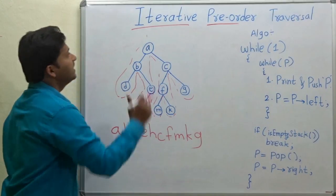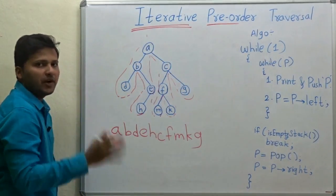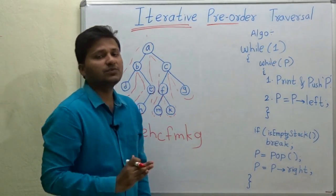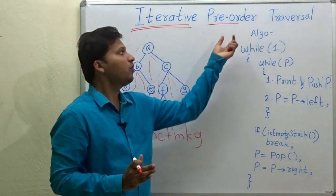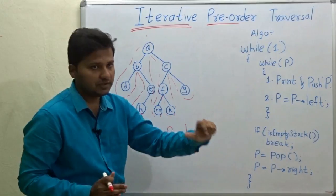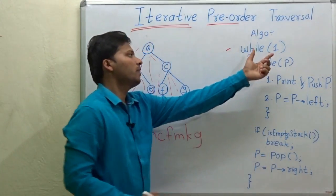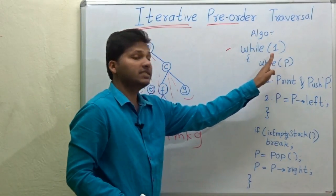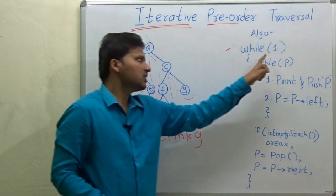Now let's see the iterative algorithm for finding the pre-order traversal. In my previous videos we saw the recursive algorithm; now we will see the iterative one. The algorithm starts with a while(1) outer loop — let's go inside.